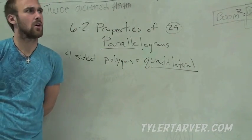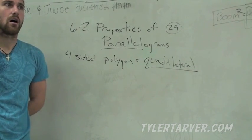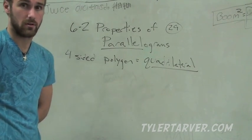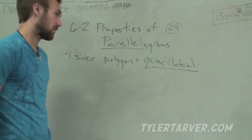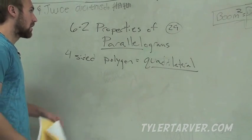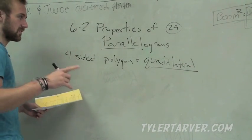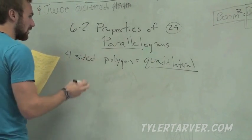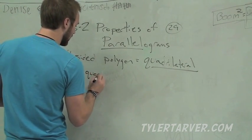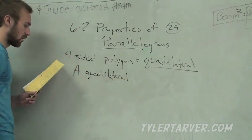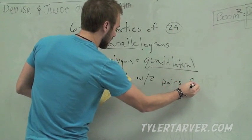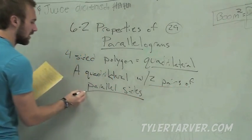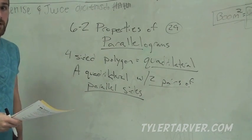Think to yourself: where have you heard 'quad' before? There's a quad-cab truck — that means it's got four doors. Quad means four, okay. So we call it a quadrilateral. Now, if that quadrilateral has two pairs of parallel sides, guess what we're probably going to call that? It's probably called a parallelogram. We've talked about it before.